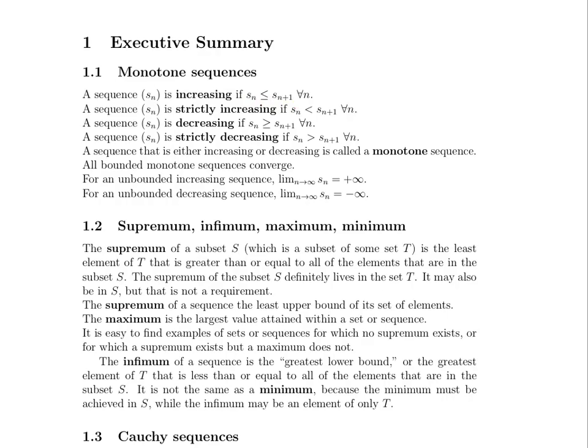A sequence that is either increasing or decreasing is called a monotone sequence. For a monotone sequence, you won't see fluctuation where terms increase and then decrease and then increase again. Some facts proven in Ross, our textbook: all bounded monotone sequences converge. For an unbounded increasing sequence, the limit is positive infinity. And for an unbounded decreasing sequence, the limit is negative infinity.